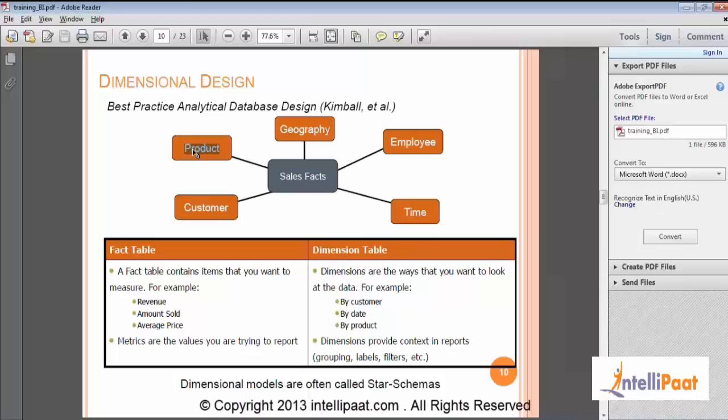And the whole difference between a dimensional table and a fact table here is in a dimensional table we have a table and in the table you have certain attributes. These attributes define the characteristics of that particular table. And a fact table is the one which contains the items which you can measure.